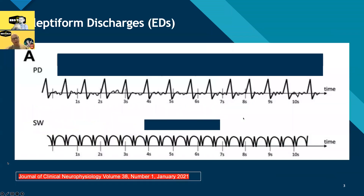Periodic discharges — we'll see those later. So the top example shows periodic discharges (PD): each is a distinct discharge, like a little triangle, with a wiggly line — a little pause — in between them. Down below there's spike-wave, where there's a spike and then a round thing, spike and round thing, with no pause at all. So we distinguish periodic discharges from the spike-wave pattern. And how many do you need to count as periodic? Six — that's the magic number.